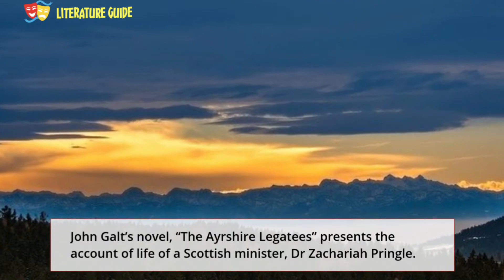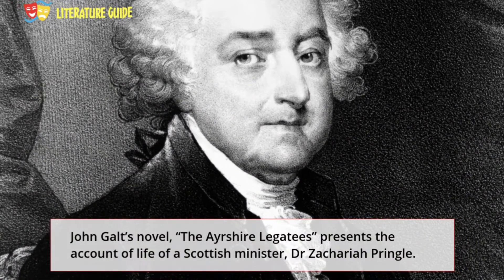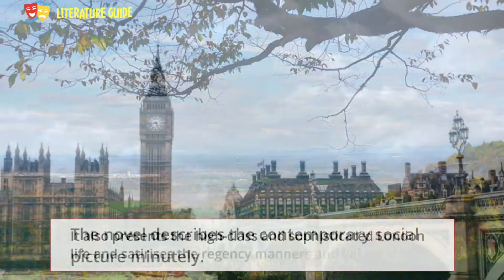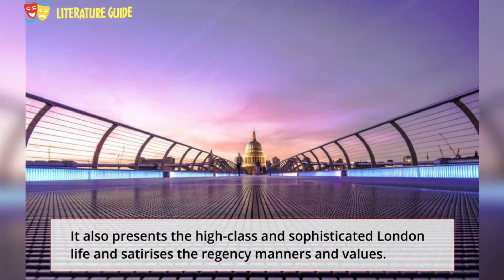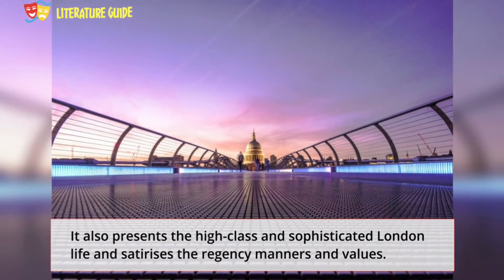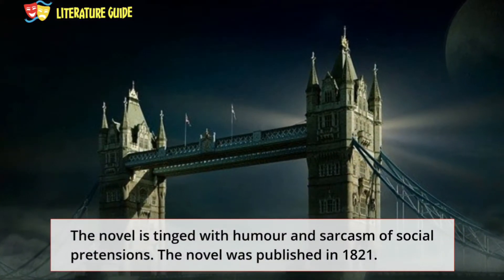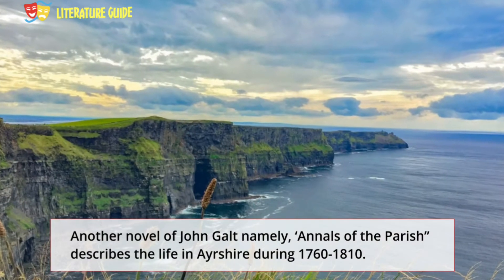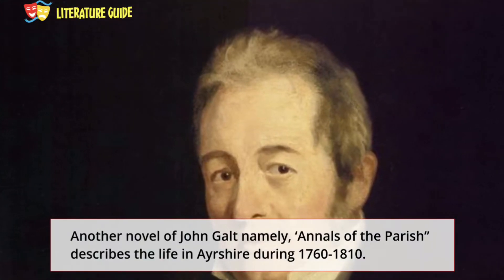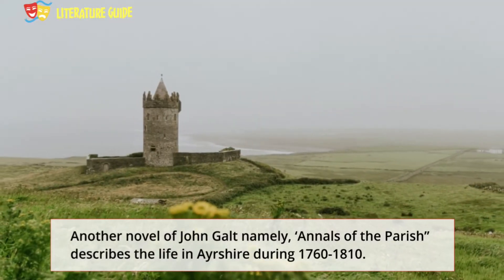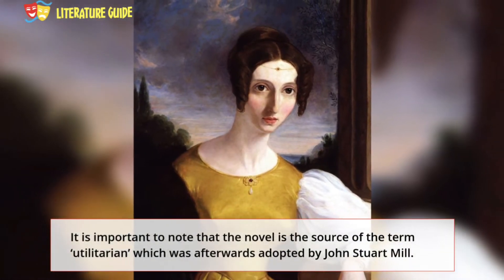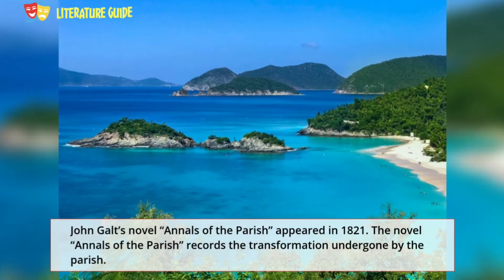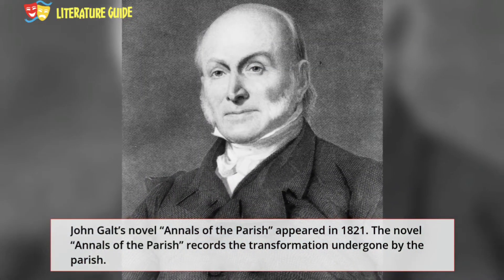John Galt's novel The Ayrshire Legatees presents the account of life of a Scottish minister, Dr. Zachariah Pringle. The novel describes the contemporary social picture minutely, presents high class and sophisticated London life, and satirizes the Regency manners and values. The novel is tinged with humour and sarcasm and was published in 1821. Another novel of John Galt, Annals of the Parish, describes the life in Ayrshire during 1760 to 1810. It is notable as the source of the term 'utilitarian,' which was afterwards adopted by John Stuart Mill. The novel appeared in 1821.